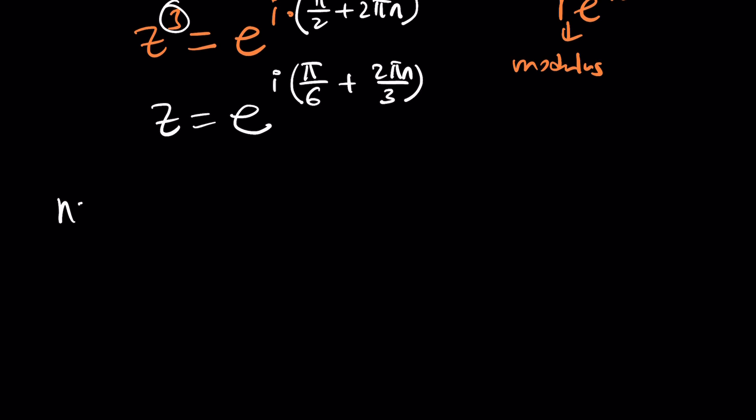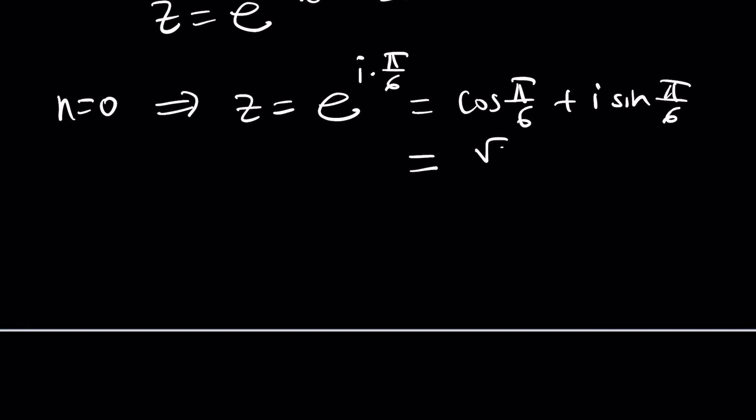Now if n is equal to zero, z is gonna be e to the power i times pi over six. By the way we can use Euler's formula both ways so we can turn this into cosine of pi over six plus i times sine pi over six. And if you know the values, cosine 30 degrees is root three over two and sine 30 is one half. So we would get root three over two plus one half i. So is that a solution?